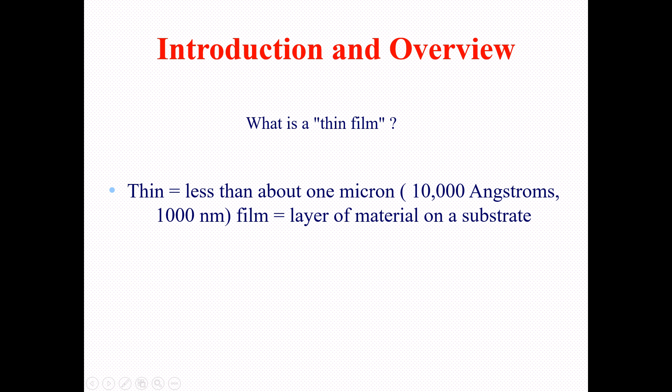We start from the word 'thin' and ask: how thin? We describe thin film as having a thickness of less than about one micron. One micron is equal to 10,000 angstroms, which in turn is equal to 1,000 nanometers. So the thickness of a thin film is about one micron, or 10,000 angstroms, or 1,000 nanometers.